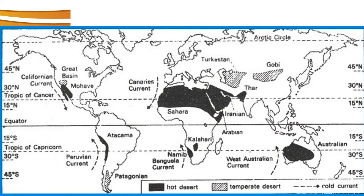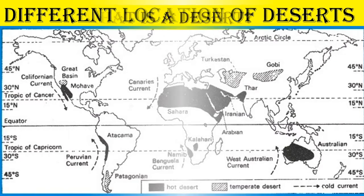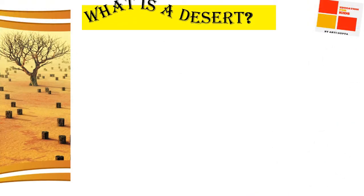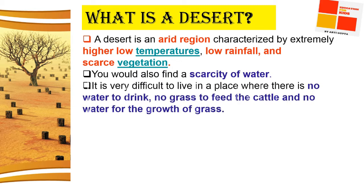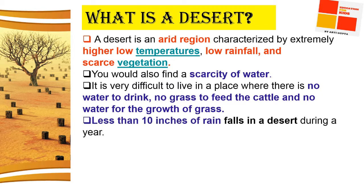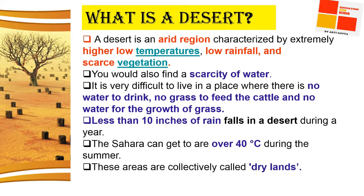In this map you are going to know about the different locations of deserts. A desert is an arid region with extremely high or low temperatures, low rainfall, and scarce vegetation. There is scarcity of water — no water to drink, no grass to feed the cattle, and no water for growth of grass. Deserts receive less than 10 inches of rainfall.